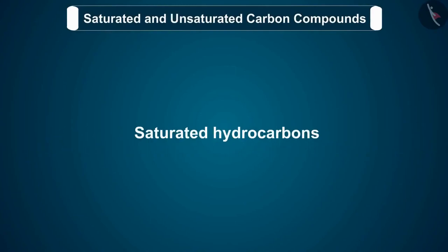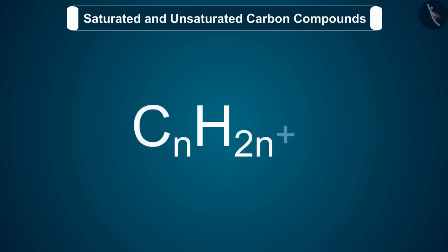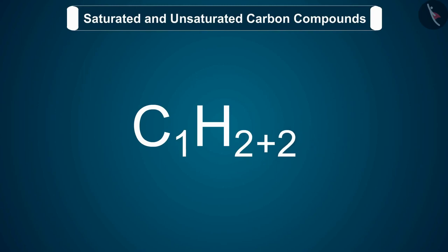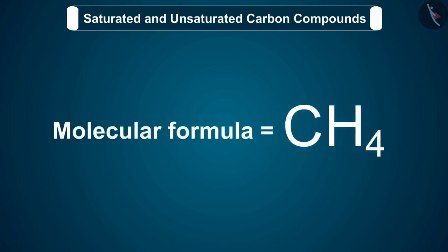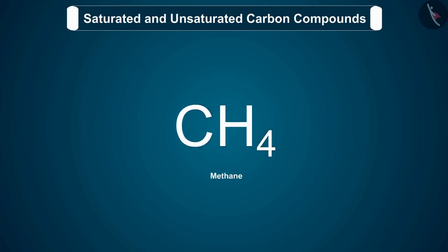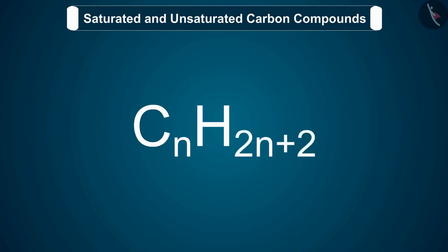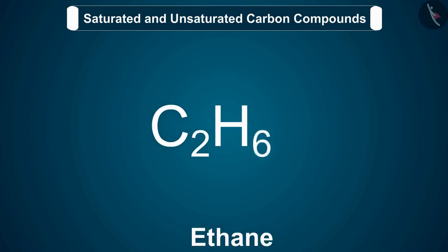Let's discuss saturated hydrocarbons with the help of examples. If an alkane has one carbon atom in its molecule, when n equals 1, its molecular formula according to the general formula becomes CH4, which we call methane. Similarly, if we take n equal to 2, we get ethane.